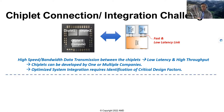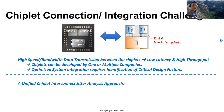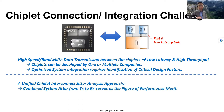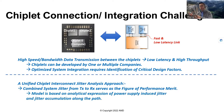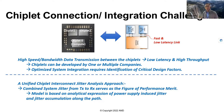These chiplets will be developed by one or multiple companies, and that complicates the matter. Optimizing the system integration requires identifying the crucial design factors. Because we're talking about speed, I'll give you a little spoiler: we'll be sharing a method called the Unified Chip Interconnect Jitter Analysis Model. We're looking at jitter — system jitter, in general — starting from the transmit side through the media to the receive side. We want to use system jitter as the figure of merit.